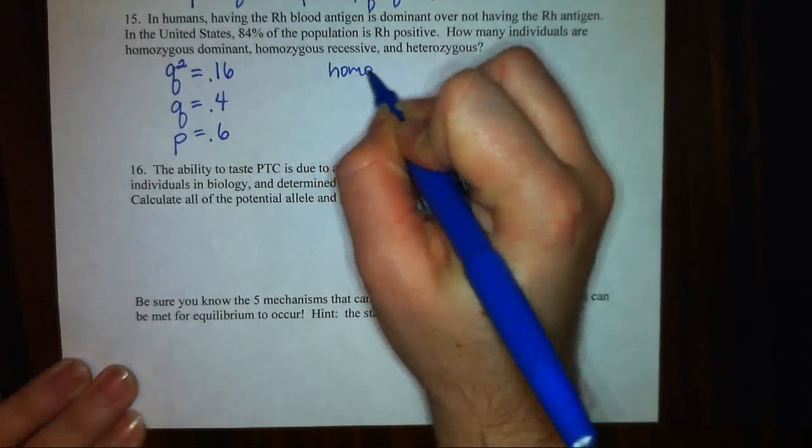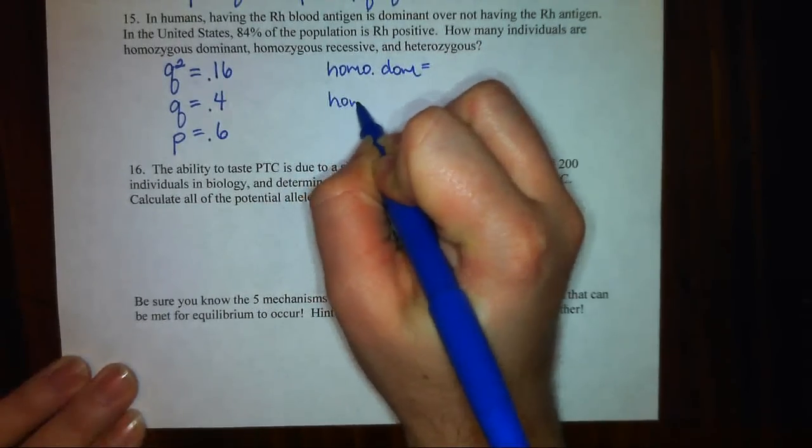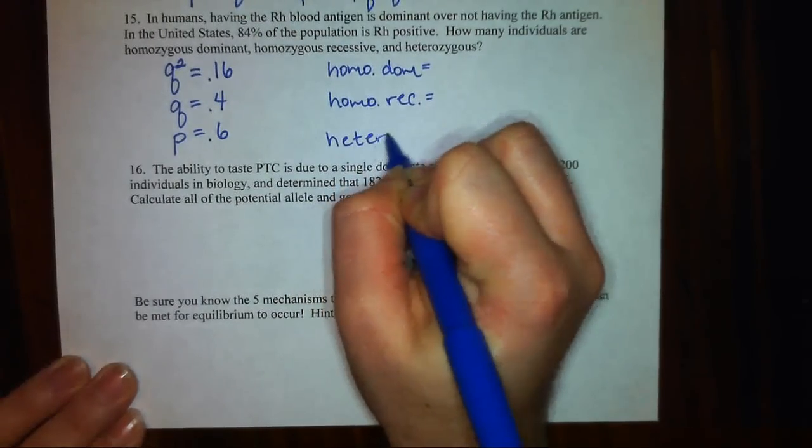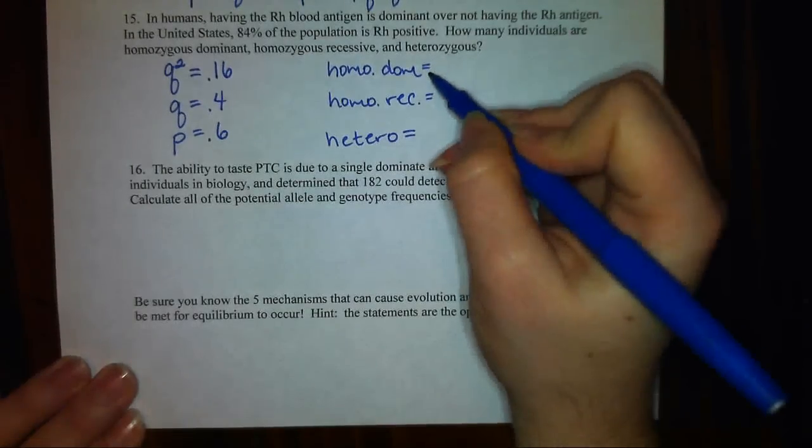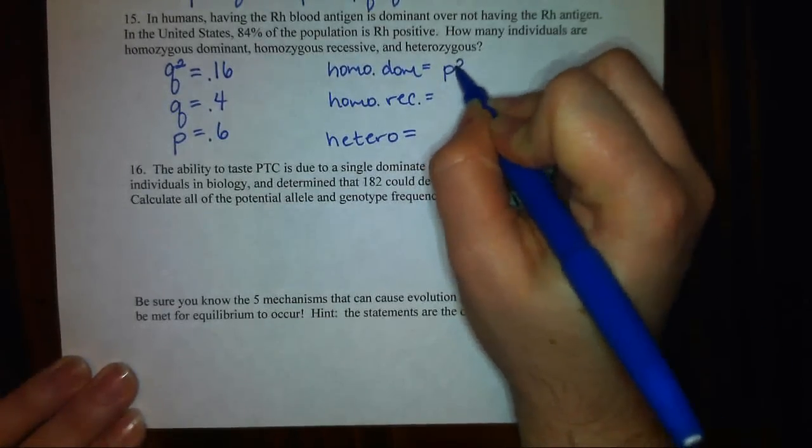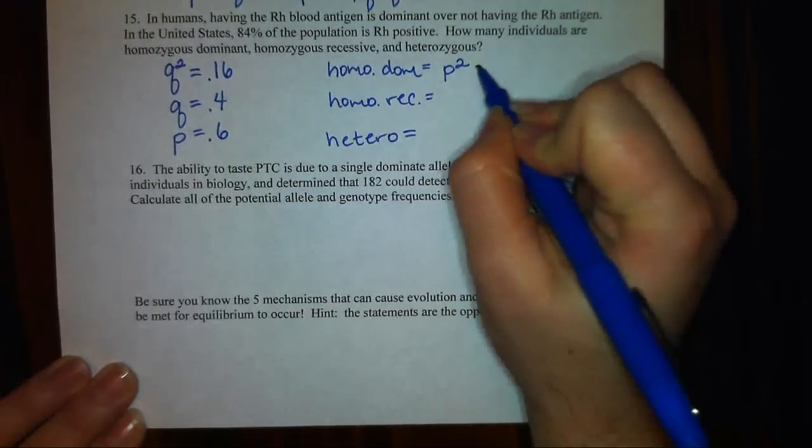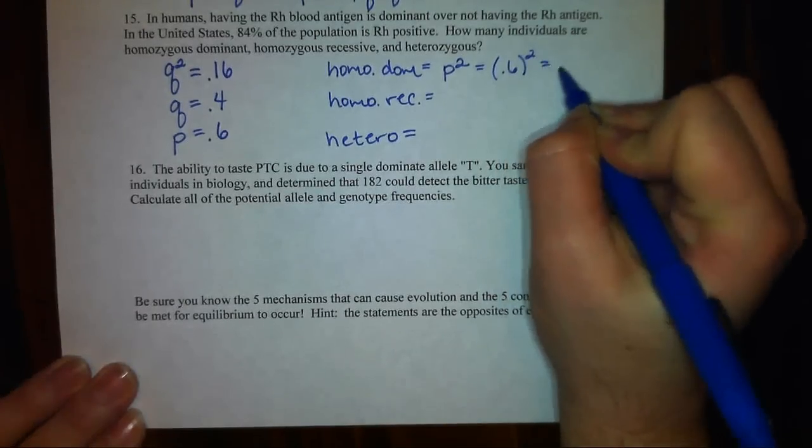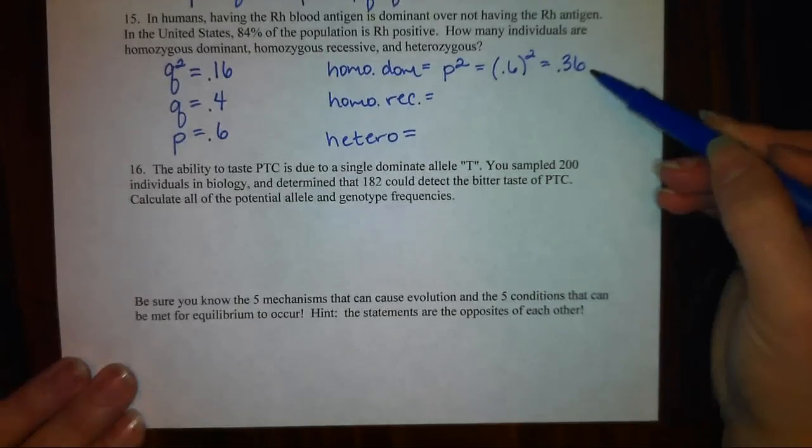I need to figure out what percentage of the population is homozygous dominant, homozygous recessive, and heterozygous. Remember, homozygous dominant is represented by P squared. I know P is 0.6. So let's go ahead and continue. 0.6 squared is 0.36. So 36% of my population is homozygous dominant.